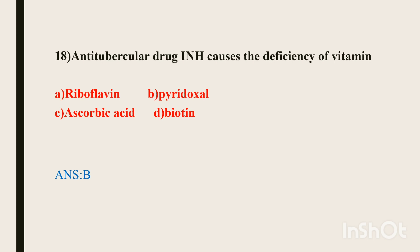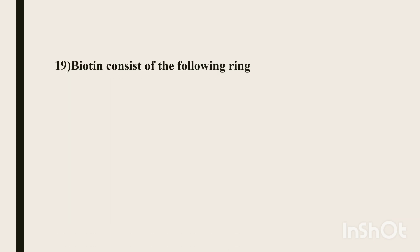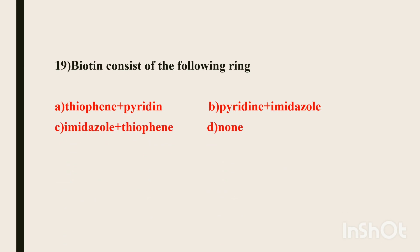Nineteenth question. Biotin consists of which ring structure? Options: thiophene plus imidazole, imidazole plus thiophene, none of the above. The biotin structure consists of an imidazole ring and a thiophene ring fused together.